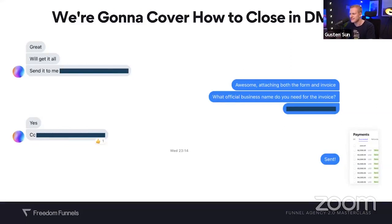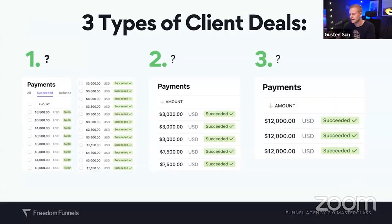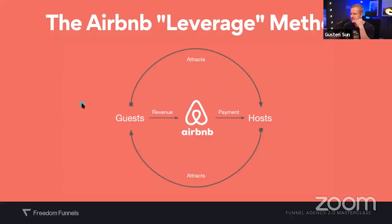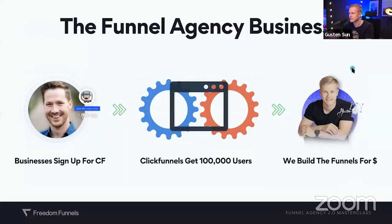We're also going to cover how to close in DMs, and I'll give you real-life examples. This is not just a long story about me — it's actually actionable steps. You want to do screenshots, take notes. We'll cover three types of different client deals, the Airbnb leverage method, and the Funnel Agency business. Some of you are new to this, so let me quickly go over it.